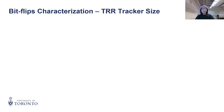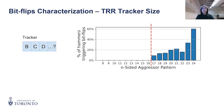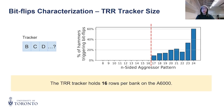Let's wrap up with the TRR tracker size characterization. In challenge three, we illustrated TRR with a small four-entry tracker. But on the A6000, our experiments show that bit flips only occur when the number of aggressor rows is 17 or more, meaning we need at least 17 aggressors to overflow the tracker, which suggests the tracker can hold 16 rows per bank. You can also find more on bit flip characterizations in our paper.